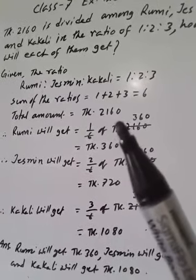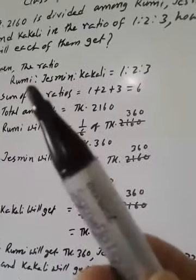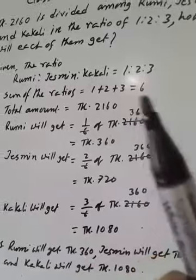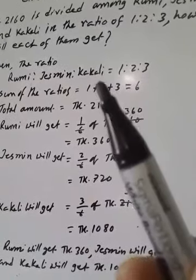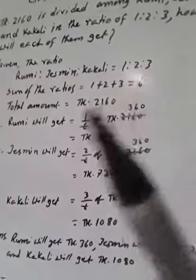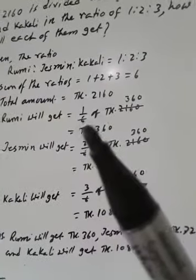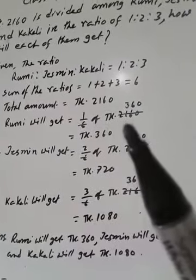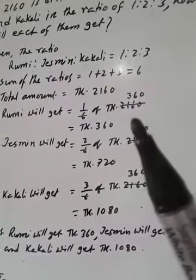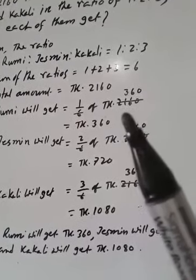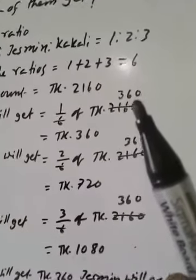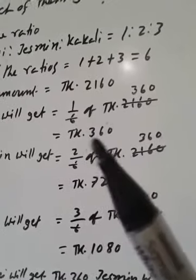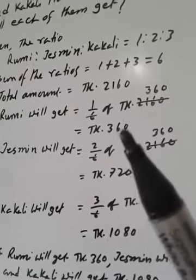Total amount 2160. Therefore Rumi's ratio, Rumi 1 by 6, Jasmine 2 by 6, Kakuli 3 by 6. Rumi's part, 1 by 6 of taka 2160. If 2160 divided by 6, it will be 360. 360 multiplied by 1, taka 360. Rumi will get taka 360.